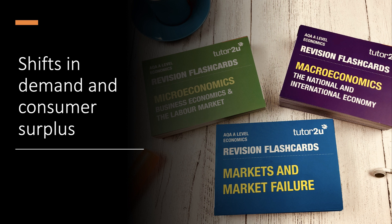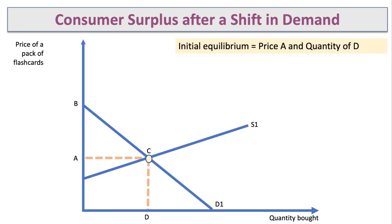Now let's think about changes in demand and supply and how they affect consumer surplus. Take the market for flashcards — a business is selling revision flashcards at price A and quantity D. The initial equilibrium is at point C where supply meets demand, so price A and quantity D. The initial area of consumer surplus is area ABC — above the price line A and beneath the demand curve.